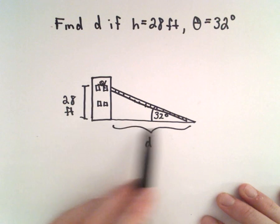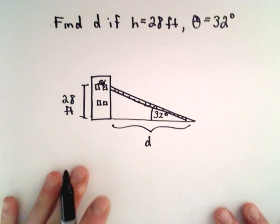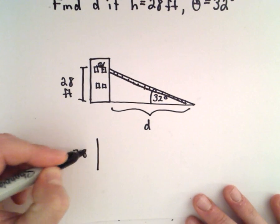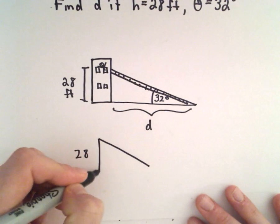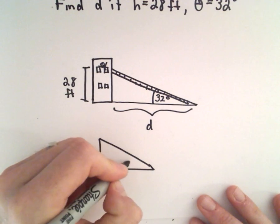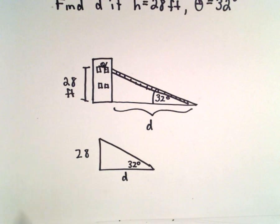D is the distance from the base of the ladder to the building. We want to find the value of D. So the idea is basically you just have a right triangle here with one side that has a length of 28. We have an angle of 32 degrees here, and then we just want to solve for D.